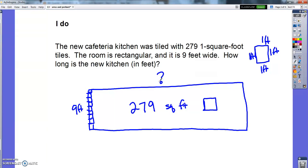So now you know the area and you know the width and you need to find out the length. So what I need to know now is if area is length times width, so I know the area. So I need to know 279 square feet is what times 9. So I've got to figure out what that other number is.